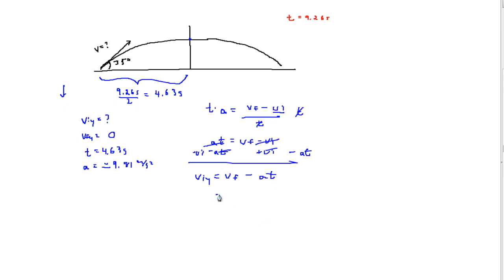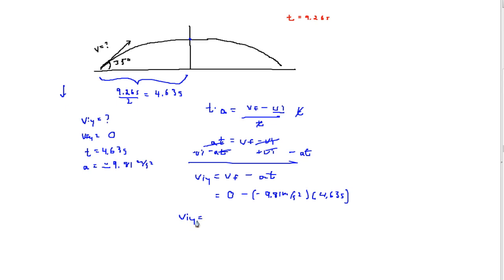Substituting all the values: the final velocity at the top of the arc is 0 meters per second, minus the acceleration due to gravity of negative 9.81 meters per second squared, multiplied by the time of 4.63 seconds. When we plug that into the calculator, the initial velocity in the y-component — the vertical component — equals 45.4 meters per second.